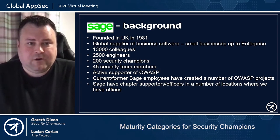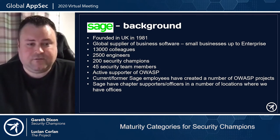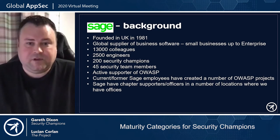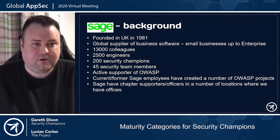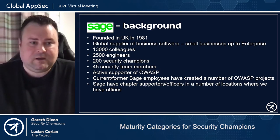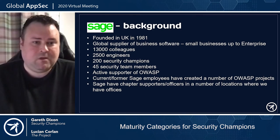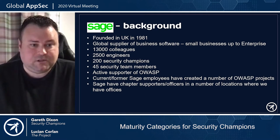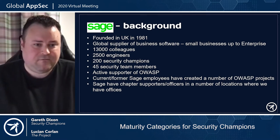I'll go through a bit of background about the company I work for. Sage was founded in the UK in 1981 and we're a global supplier of business software for businesses ranging from startups up to enterprise. We've got 13,000 colleagues, of those 2,500 are engineers, and within the engineering community we have 200 security champions, and we support a global security team who have 45 members.